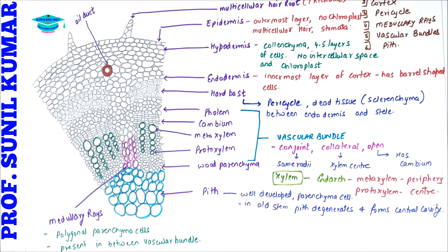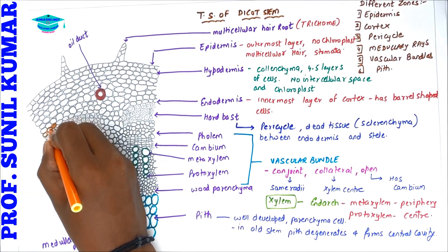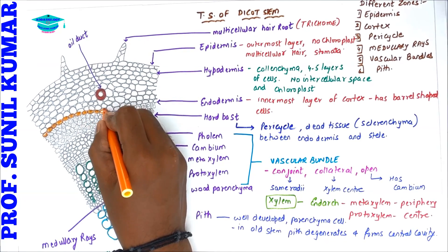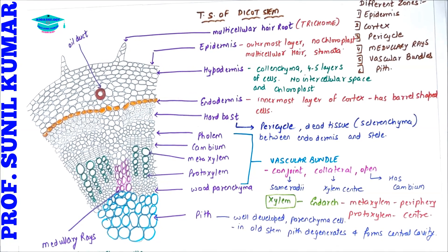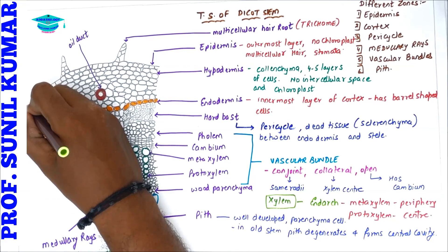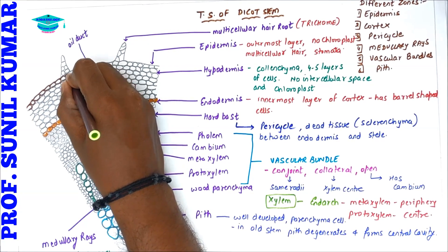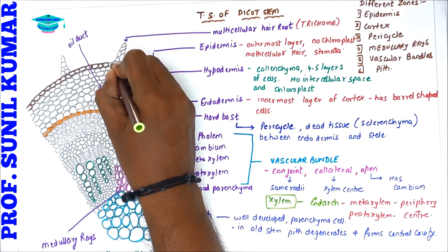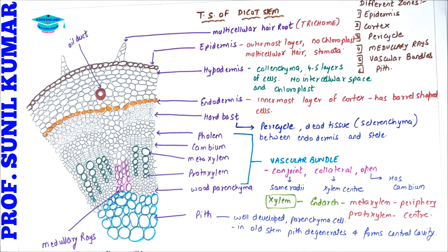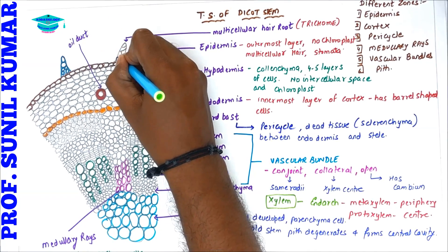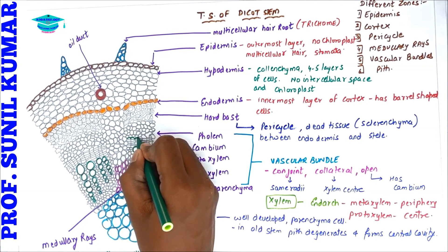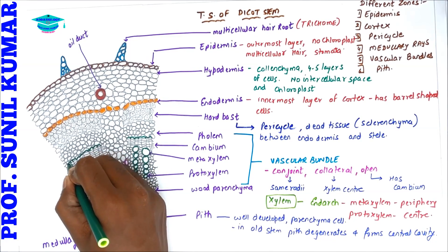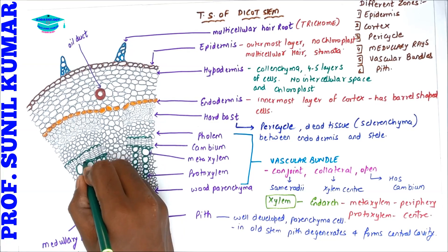The orangish layer visible in the diagram is the cortex — the area between the epidermis and the endodermis is called the cortex. The cortex is made up of parenchyma cells. The blue color structure is the trichome, which is a multicellular hair root structure. This is how you can remember the anatomy of the dicot stem in a simple way.